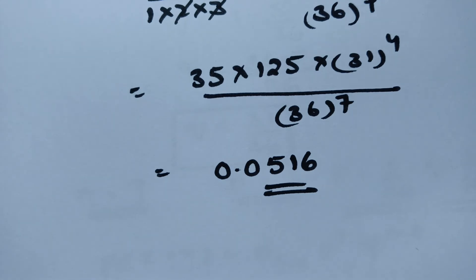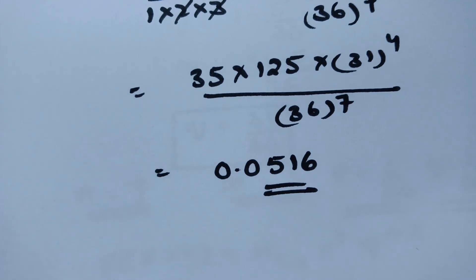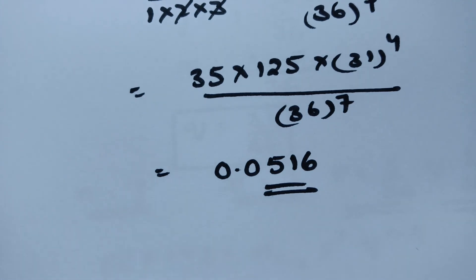So 0.0516 is the probability of getting the sum 6 exactly 3 times in 7 throws with a pair of fair dice. Thank you for watching — I will be uploading many more problems on binomial distribution. Have a look and share if you liked it!